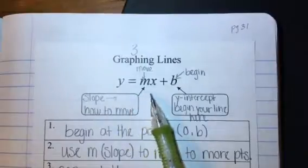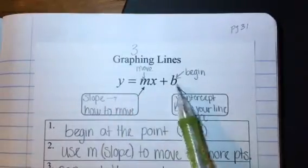Remember that y equals mx plus b, m is your slope, b is your y-intercept.